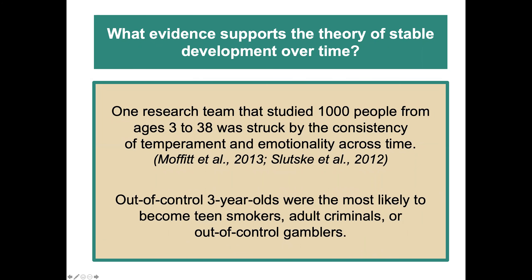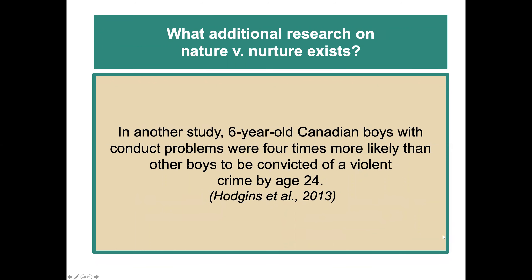What evidence supports the theory of stable development over time? One research team that studied 1,000 people from ages three to 38 was struck by the consistency of temperament and emotionality across time. Out-of-control three-year-olds were the most likely to become teen smokers, adult criminals, or out-of-control gamblers. In another study, six-year-old Canadian boys with conduct problems at age six were four times more likely than other boys to be convicted of a violent crime at age 24. These are interesting results, but we need more information and context to fully evaluate the studies.